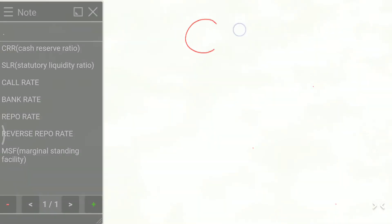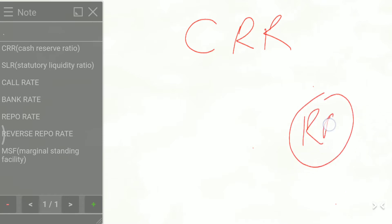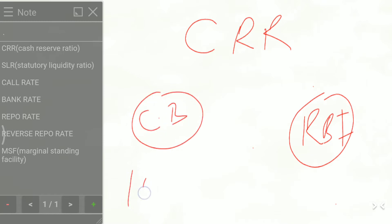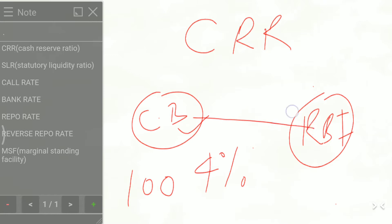Now let us see CRR. CRR is the ratio of the total deposits of a bank in India which it is required to hold with RBI in cash form, and this CRR is fixed by RBI. Suppose the total deposit is 100 rupees and the CRR is 4%. So this bank is required to hold 4 rupees with RBI, not with itself.